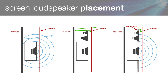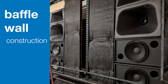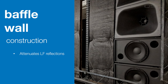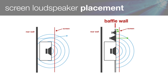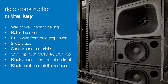To minimize reflected sound, we strongly recommend treating the rear wall behind the screen with heavy acoustical absorption. A baffle wall is essentially a false wall into which the screen channel loudspeakers are flush-mounted and is typically the same size as the screen. A solid baffle wall attenuates low-frequency reflections off the back wall, enhances low-frequency efficiency, and minimizes mid- and high-frequency reflections through the screen. Without a baffle wall, low-frequency energy bends around the loudspeaker and reflects off the rear wall, combining with first-arrival sound and creating cancellations. Rigid construction is the key. Even though acoustic treatment material is not effective below about 250 Hz, it does a good job of attenuating mid- and high-frequency reflections from the back side of the screen.